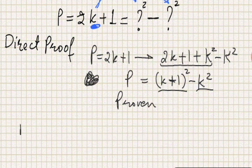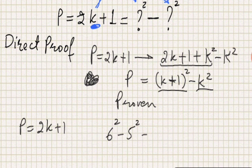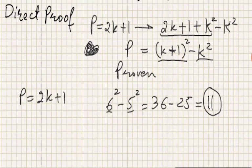For example, if I look at 6² - 5², I get 36 - 25 which is 11. 11 is an odd number, that is correct. So 11 is a difference of two squares.